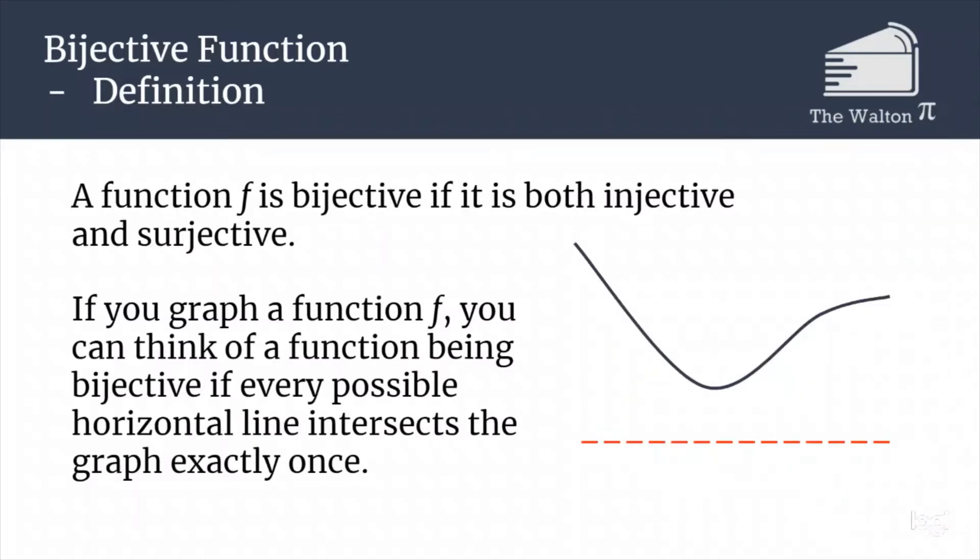And then this graph is not going to be bijective because this is not surjective. There are values that the function does not attain.